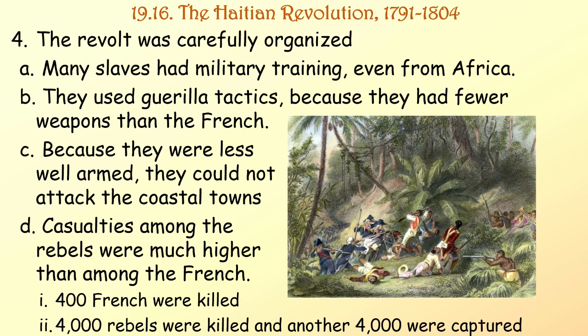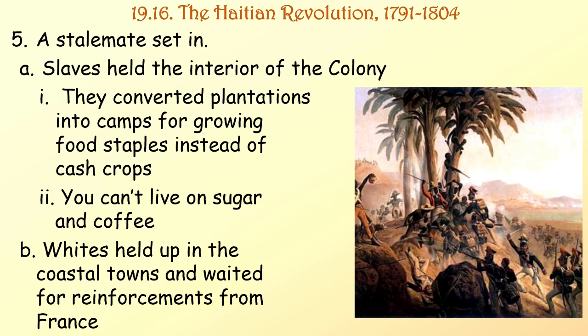The revolt was carefully organized. Many slaves had military training, even from Africa. They used guerrilla tactics because they had fewer weapons than the French, and because they were less well-armed they could not attack coastal towns. Casualties among the rebels were much higher — about 400 French were killed, but about 4,000 rebels were killed and another 4,000 were captured. A stalemate set in: slaves held the interior, converting plantations into camps for growing food staples instead of cash crops. Whites held up in coastal towns and waited for reinforcements from France.